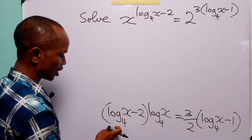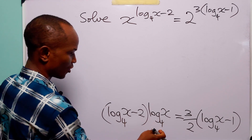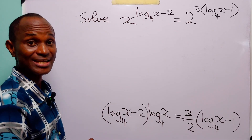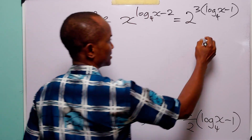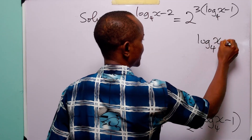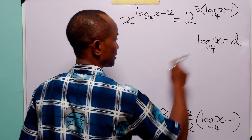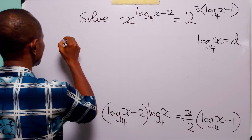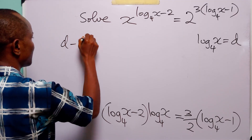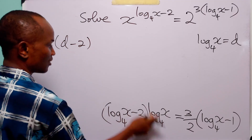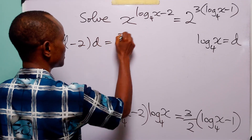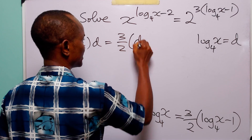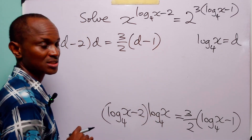Now you can see that we have log to base 4 of x appearing multiple times. So to tidy up our presentation, let log to base 4 of x be equal to d. With this substitution, this equation is going to be d minus 2, multiplied by d, is equal to 3 over 2 multiplied by d minus 1.